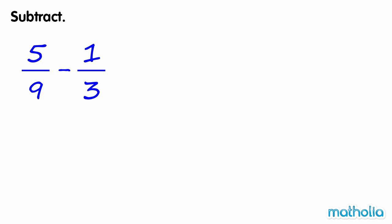Subtract. We need to find 5 ninths minus 1 third. The denominators of these fractions are different — they are unlike fractions.